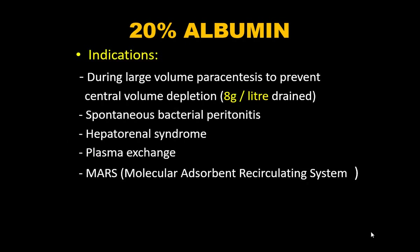Indications for albumin in the ICU: large-volume paracentesis (>5 L) — supplement 8 g of albumin per liter drained — to prevent central volume depletion. In spontaneous bacterial peritonitis (SBP), to prevent hepatorenal syndrome: 1.5 g/kg on day 1 and 1 g/kg on day 3. Also indicated in hepatorenal syndrome and plasma exchange in MARS (molecular adsorbent recirculating system).